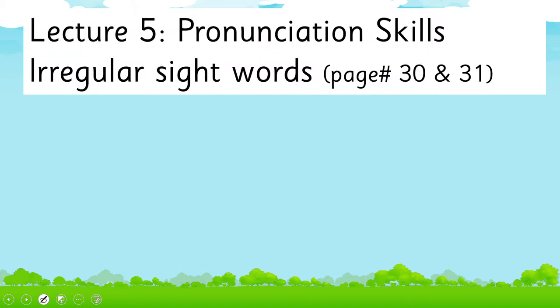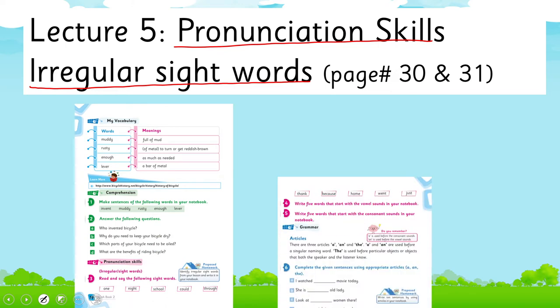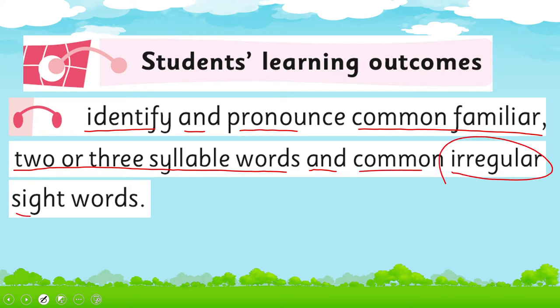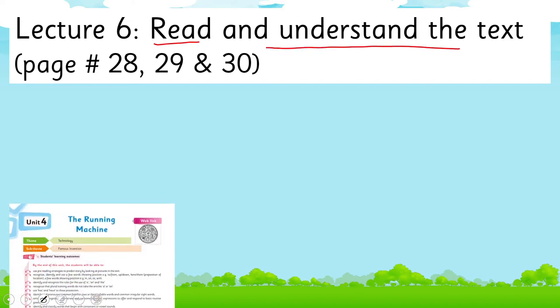Lecture 5 under the title of pronunciation skills, we learn about irregular sight words and will cover page 30 and 31 of your book. The SLO will cover is to identify and pronounce common familiar two or three syllable words and common irregular sight words. In lecture 6, we'll read and understand the text. We'll cover page 28, 29, and 30 of your book.